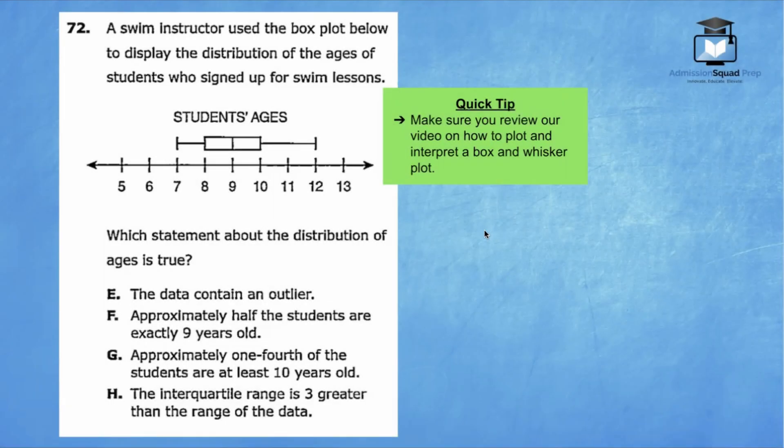For question 72, you are being asked to interpret information about a box and whisker plot. Make sure you take some time to review our video on how to plot and interpret a box and whisker plot. Let's get started. A swim instructor used the box plot below to display the distribution of the ages of students who signed up for swim lessons. Here we have the diagram below.